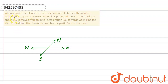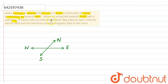In this problem we have given that when a proton is released from rest in a room, it starts with an initial acceleration a0 towards west. When it is projected towards north with a speed v0, it moves with an initial acceleration 3a0 towards west. Find the electric field and minimum possible magnetic field in the room.